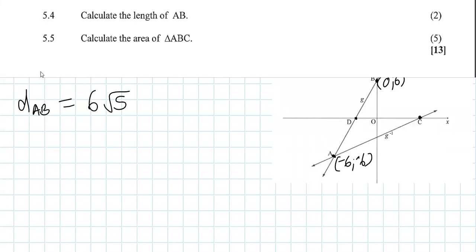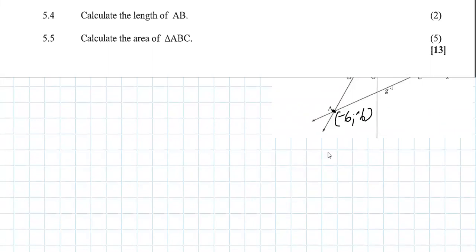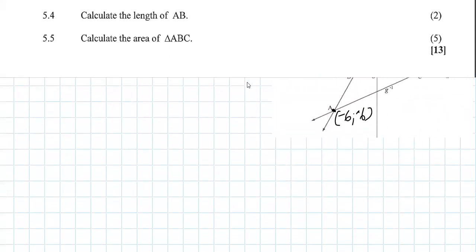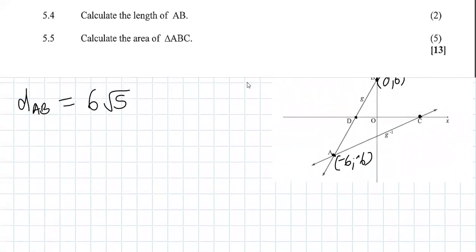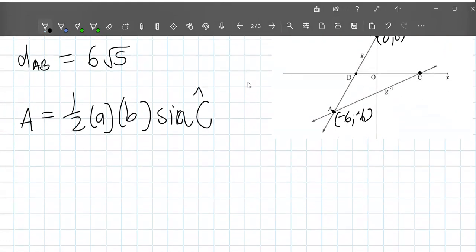The last question is 5.5: calculate the area of triangle ABC. Looking at this, it is a non-90-degree triangle, so we can use the area rule for non-90-degree triangles. Our area equals one-half times a times b times sine of angle C.